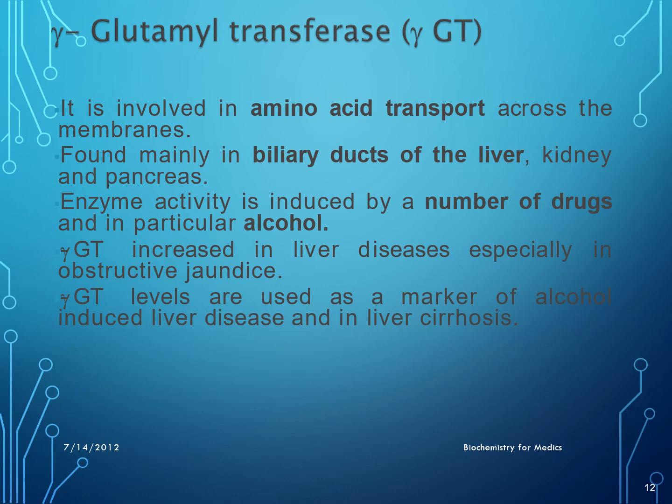Another important enzyme is gamma-glutamyl transferase (GGT). It is involved in amino acid transport across membranes and is found mainly in the biliary ducts of the liver, kidney, and pancreas. Enzyme activity is induced by a number of drugs and particularly by alcohol consumption. GGT is increased in liver diseases, especially in obstructive jaundice, and is used as a marker of alcohol-induced liver disease.